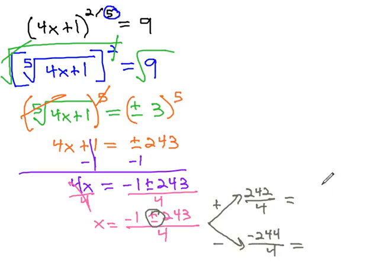And we can reduce that to our two answers, 121 over 2, and negative 61.